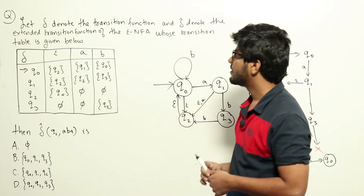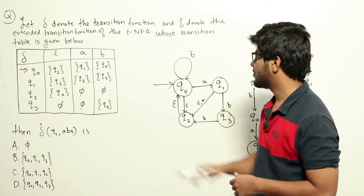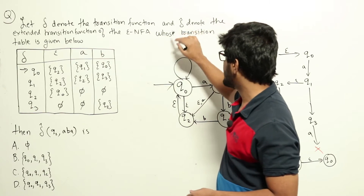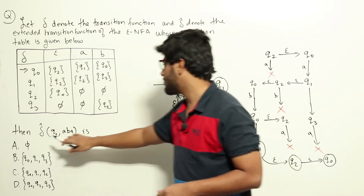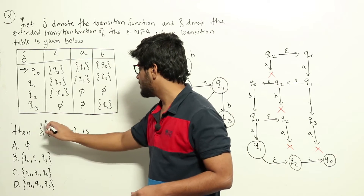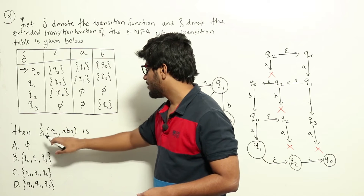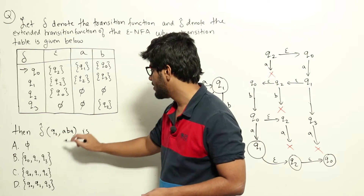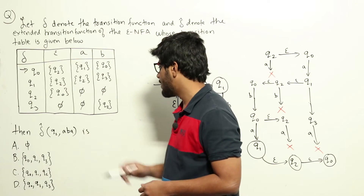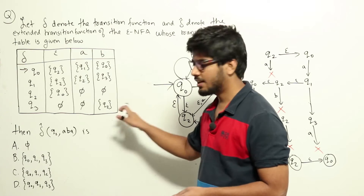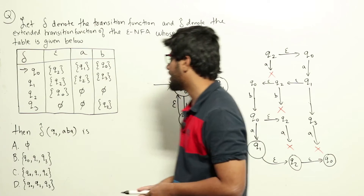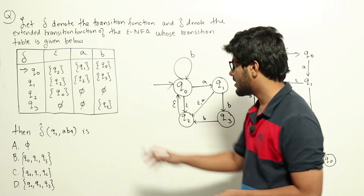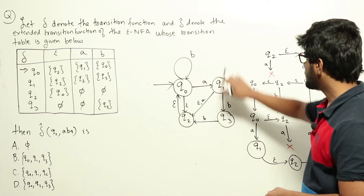The letters a and b are in the alphabet. They are asking us to find out the extended transition function delta-cap. We need to find delta-cap of q2 on string aBA, which means: if we are in state q2 and we are reading the string aBA, which states can we finally reach? Delta-cap means we also need to include epsilon transitions.